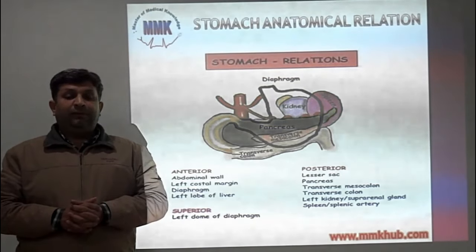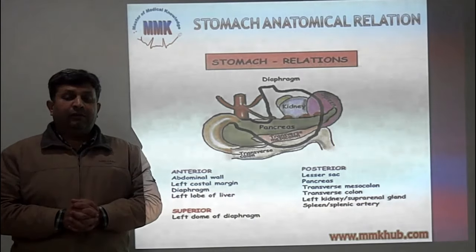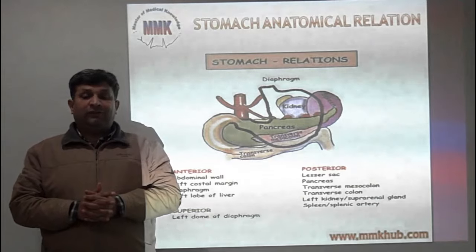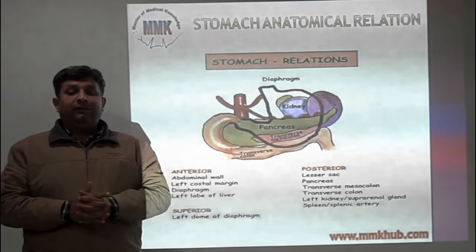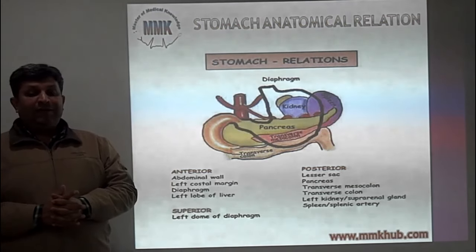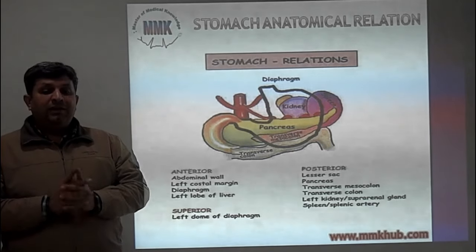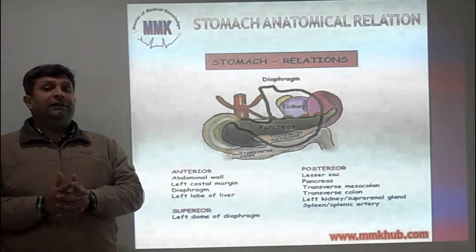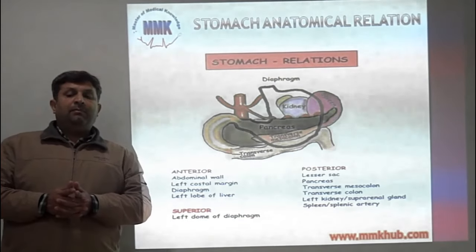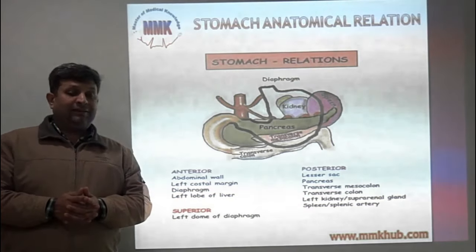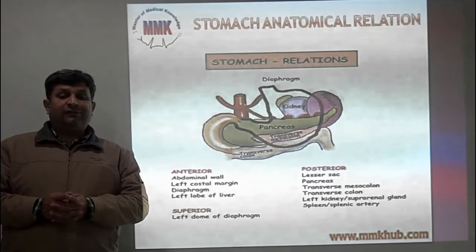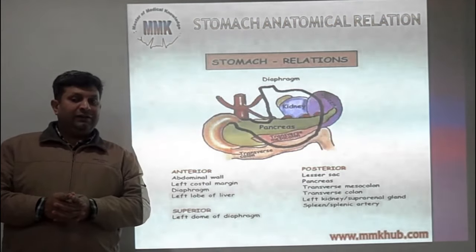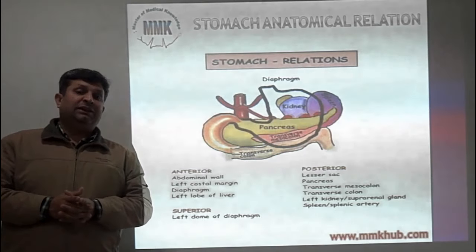This diagrammatic representation clearly elaborates the different relations of the stomach with surrounding structures. Anteriorly there is the abdominal wall, left costal margin, and diaphragm. The left lobe of the liver is also anterior. Superiorly there is the diaphragm, and posteriorly there is the lesser sac, pancreas, transverse mesocolon, transverse colon, left kidney, suprarenal gland, and spleen.